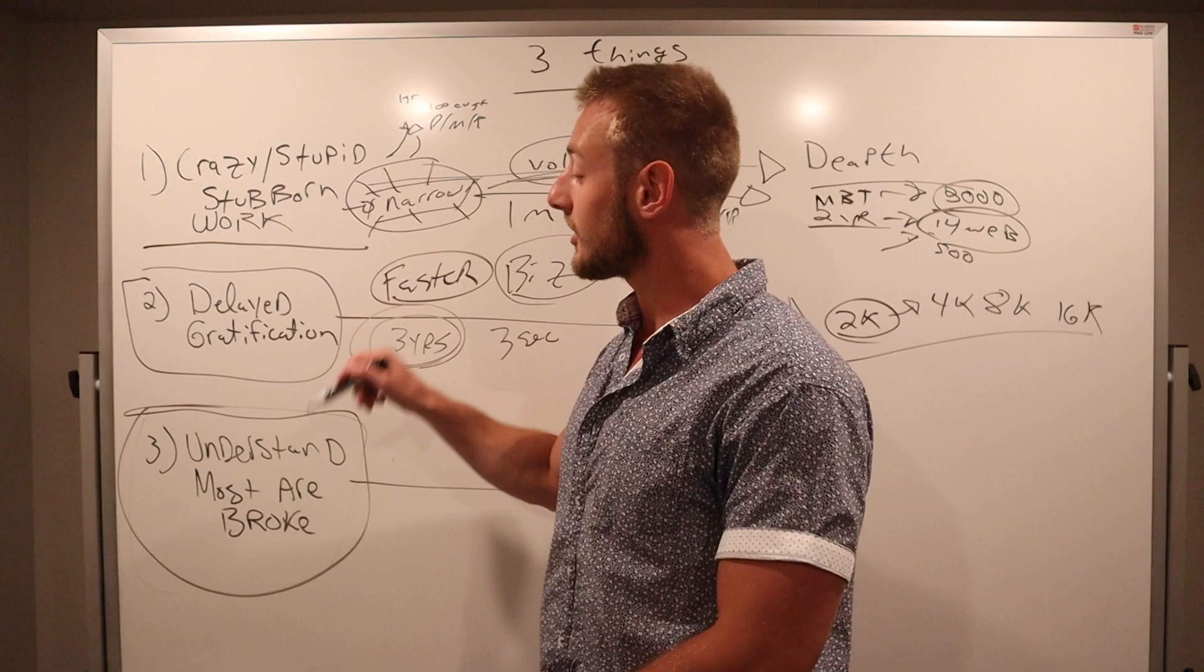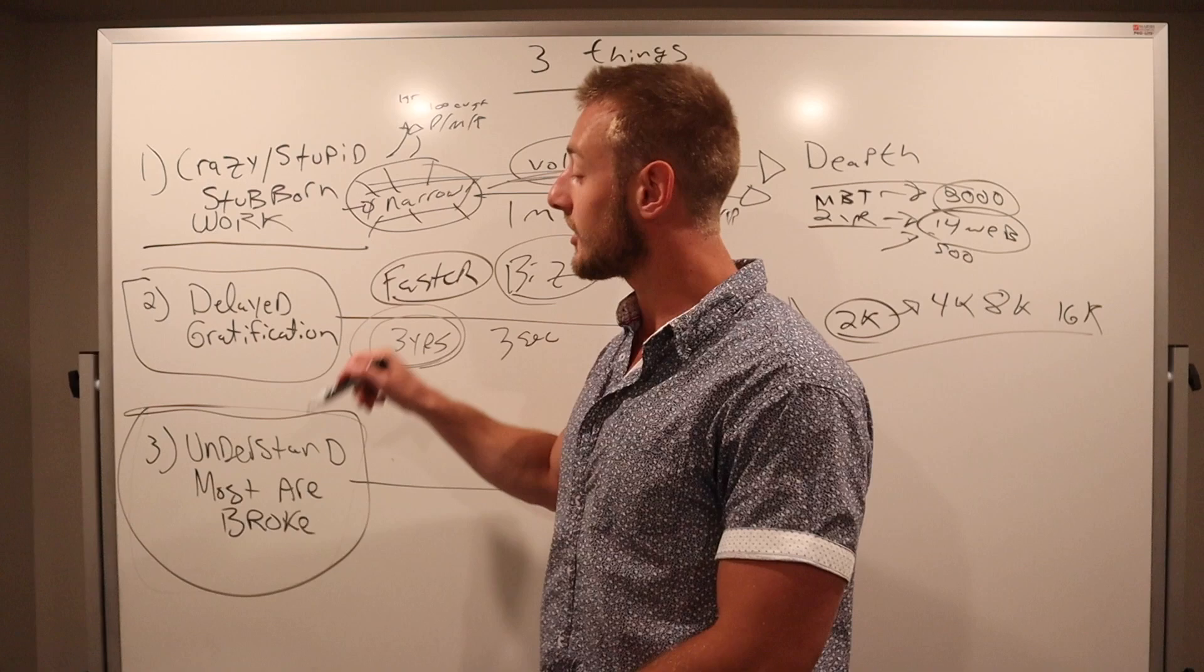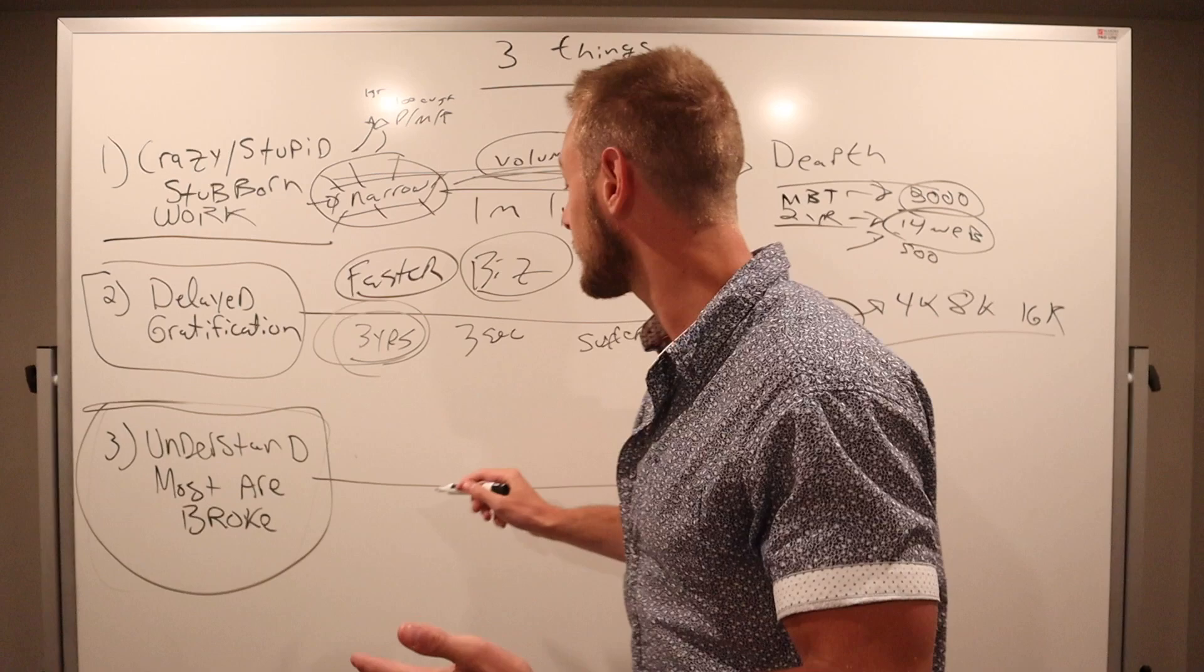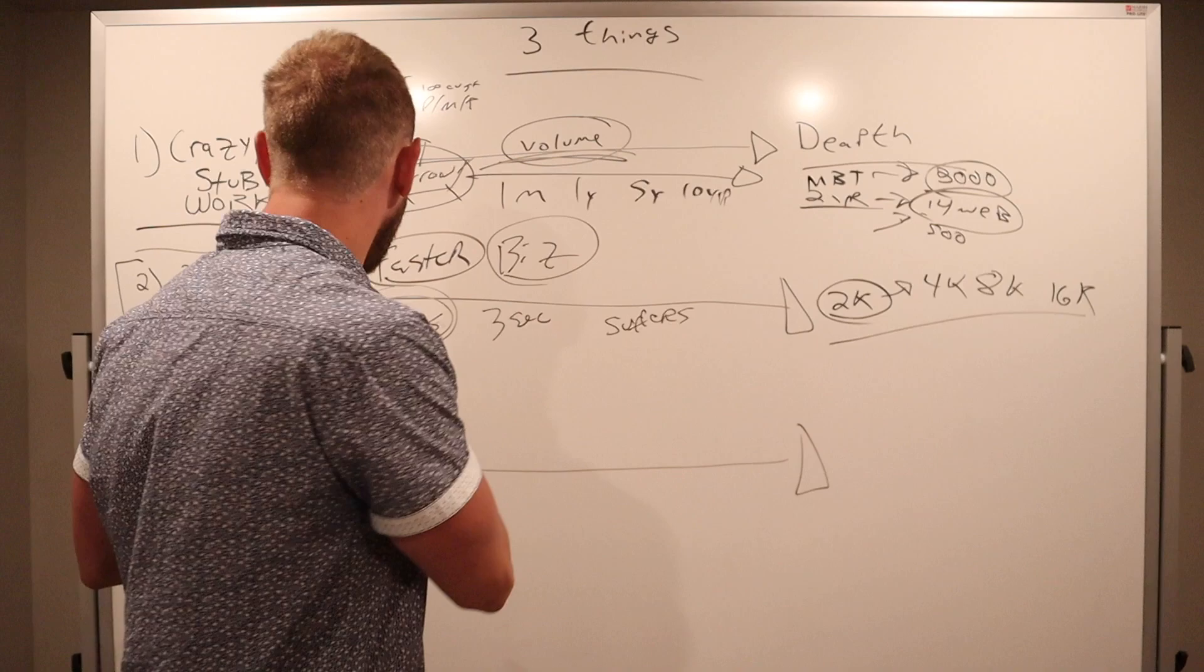Number three is the most powerful, and this stems into comparing yourself to most people. You have to understand that most people are broke. But Instagram and the media and everybody else doesn't portray anything that way. You have to understand most people don't have a lot of money, and that's okay.